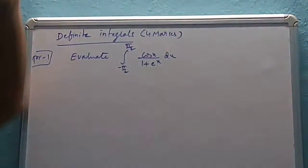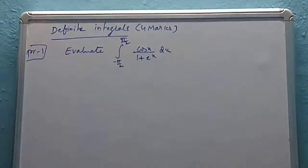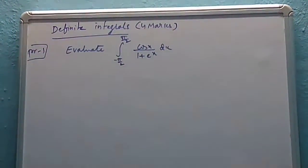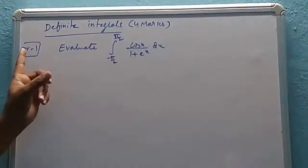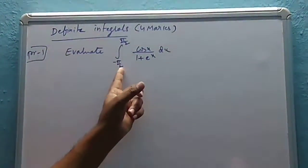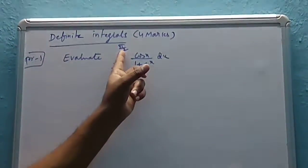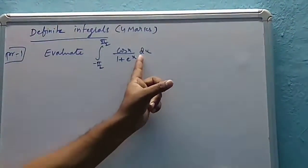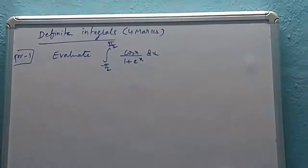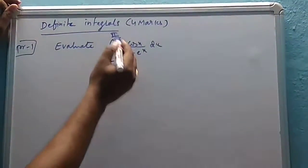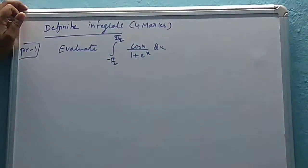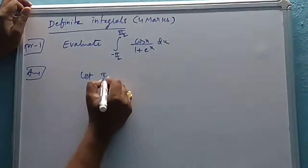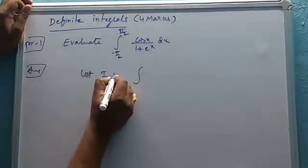This is a 7 marks question on definite integrals. I am going to talk about definite integrals, 4 marks. I am going to evaluate the integral from minus π/2 to π/2 of cos(x) divided by (1 plus e to the power x) dx. This is the solution — I am going to let this integral be denoted by I.